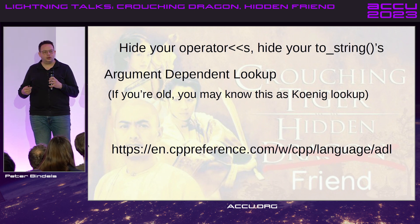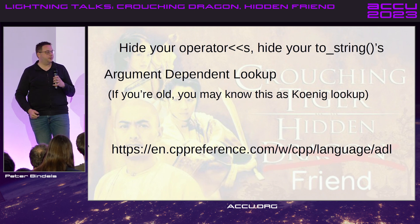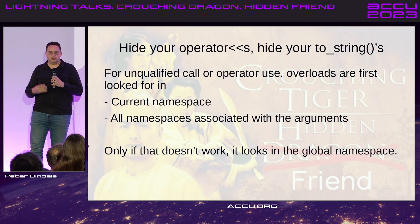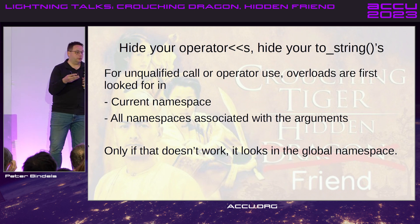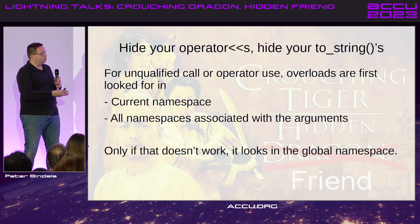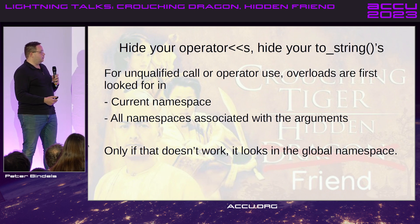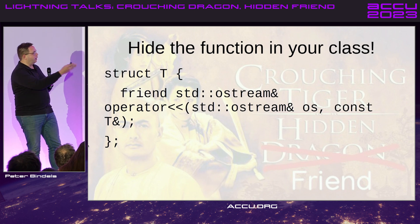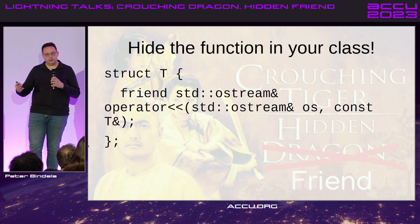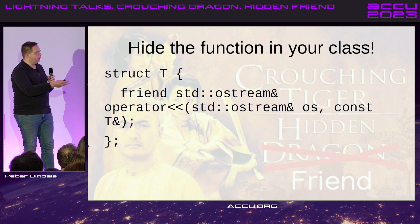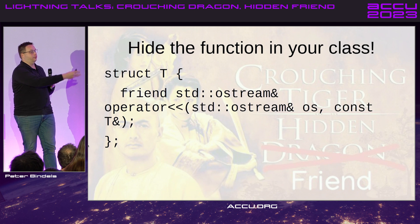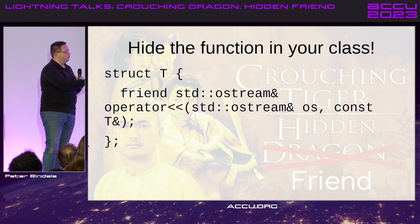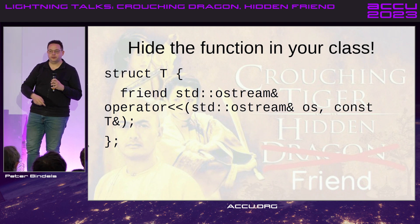We hide them with a thing called argument-dependent lookup. And if you're really old, you know this as Koenig lookup. The idea is we're going to use an argument, and the argument is in some kind of a namespace or a class, and your operator is only going to be found if it's going to be using one of those arguments. And if that doesn't work, it's going to look in the global namespace and find the entire mess again. So what we do is we just hide it in the class — we put it in the class, we make it a friend, it's now a global function, but the namespace and this function only participates if this class is involved. Which means that if we're trying to output this type, we're getting this function. If we're not outputting this type but something else, it doesn't even get found — it doesn't end up in your error messages.